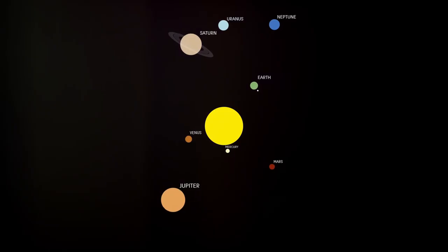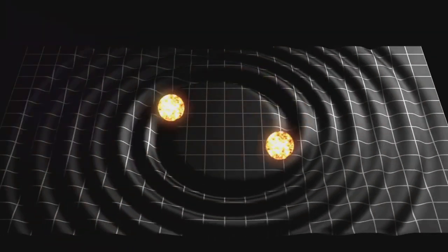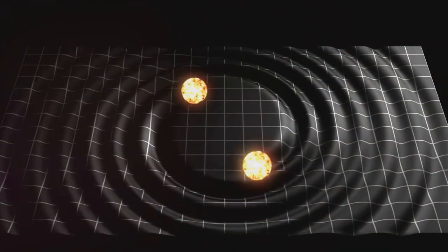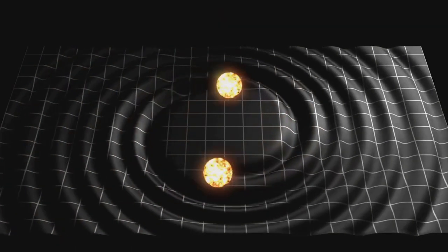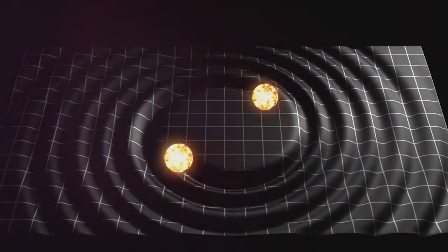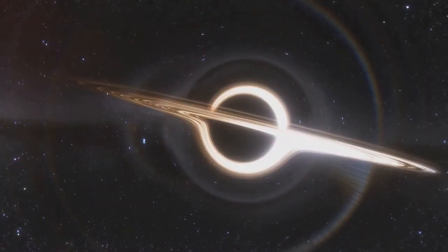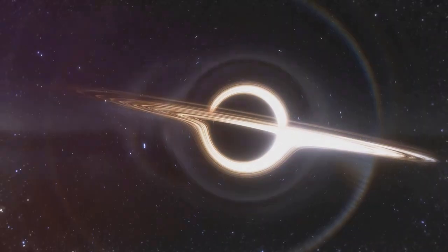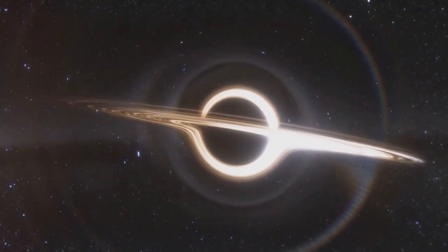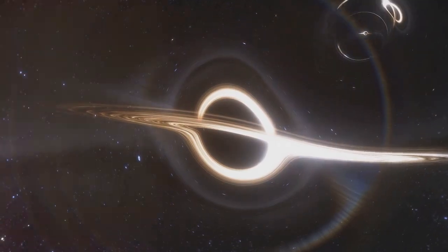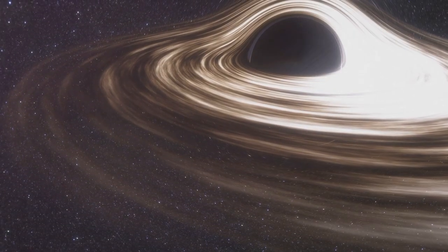However, these orbits aren't just simple circles or ellipses. They're influenced by the gravitational pull of the planet, the other particles in the rings, and even the moons of the planet. These multiple gravitational interactions create a complex web of forces that dictate the motion of each particle, shaping the overall structure of the rings.